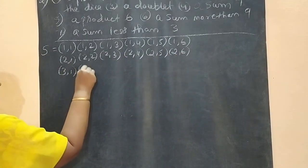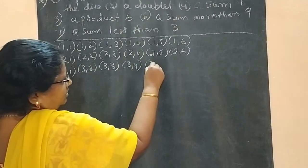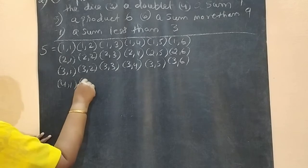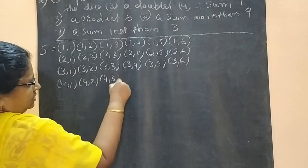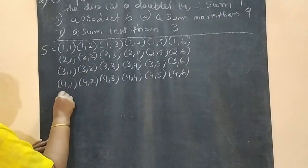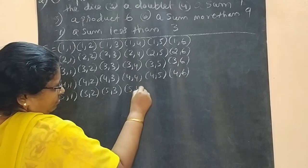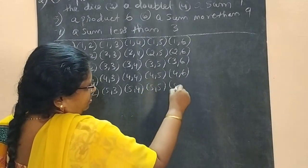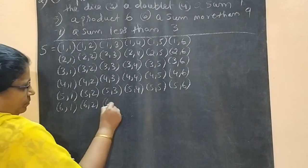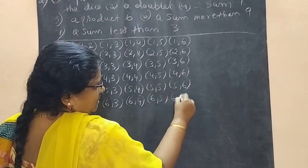Continuing: (3,1); (3,2); (3,3); (3,4); (3,5); (3,6). Then (4,1); (4,3); (4,4); (4,5); (4,6). Then (5,1); (5,2); (5,3); (5,4); (5,5); (5,6). Last row: (6,1); (6,2); (6,3); (6,4); (6,5); (6,6).